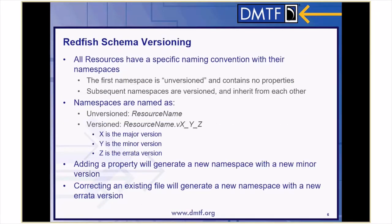Since it was expected for the Redfish data model to grow over time, it was important to establish a versioning scheme so that clients and developers can identify when new properties are added to an existing resource. All resources use a specific naming convention with their namespaces to show this. The first namespace in a resource is unversioned and contains no properties. Subsequent namespaces are versioned and inherit from each other. The unversioned namespaces take the format of resource name, whereas the version namespaces take the format of resource name.vx_y_z, where x, y, and z are the major, minor, and errata versions respectively.